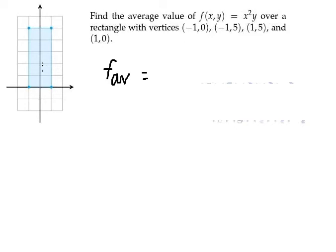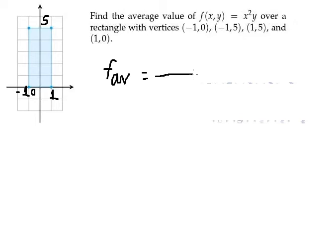We have negative one to positive one for x, and from zero to five for y. So the bounds for x are from negative one to positive one, and the bounds for y are from zero to five. We have one over (one minus negative one) and (five minus zero) in the denominator.